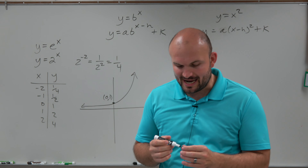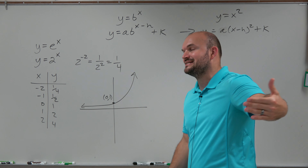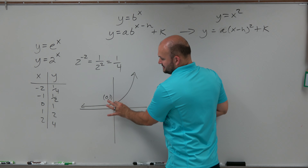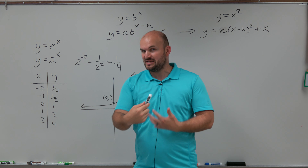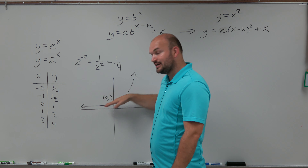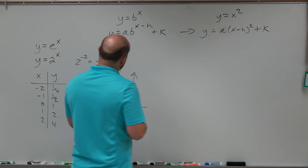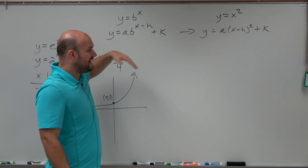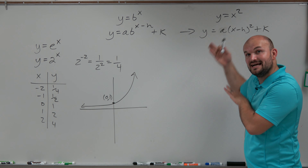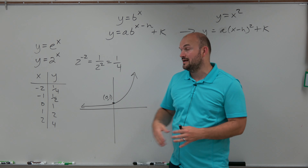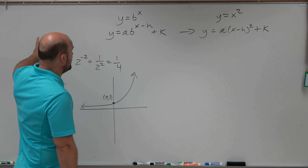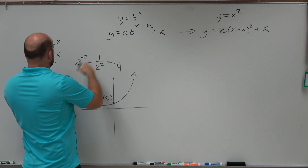We can also get into transformations and what effects different values are going to have. Here is your basic transformation graph. I like to compare this to the quadratic — y equals x squared was the pure form of a quadratic graph. When we applied transformations, we had a times (x minus h) squared plus k. The a deals with stretching and compressing, h shifts left or right, and k shifts the graph up or down.